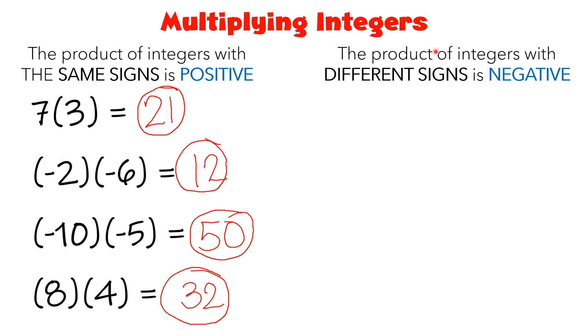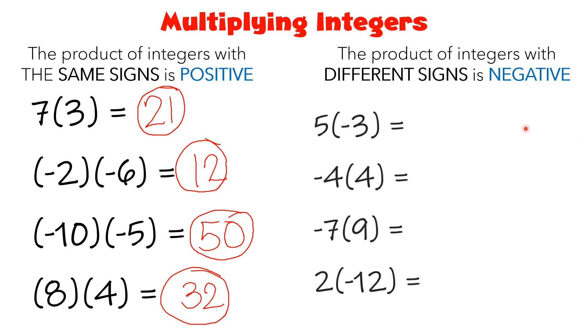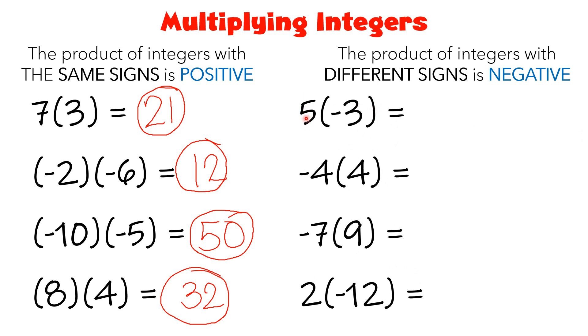Now, if you have different signs, your answer must be negative. Let's have examples for that. First one: 5 times negative 3. They have different signs, so your answer will be negative. 5 times 3 is equal to 15, so the answer is negative 15.